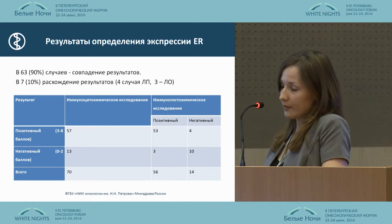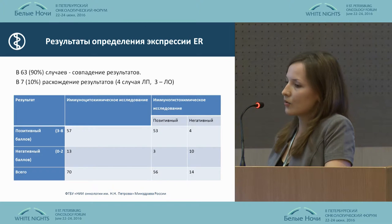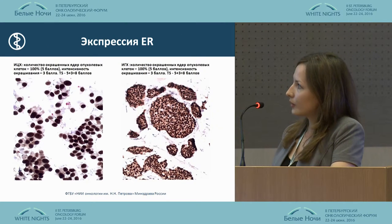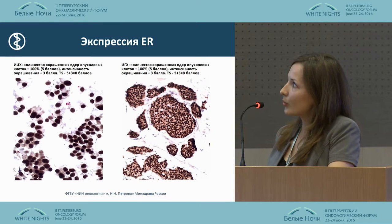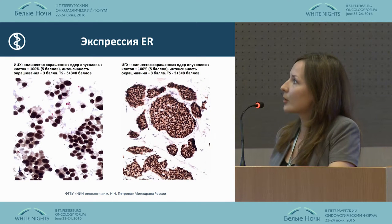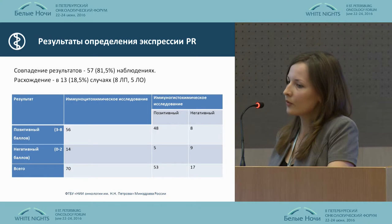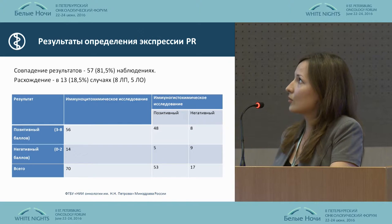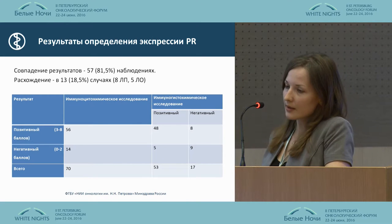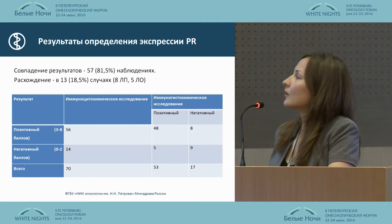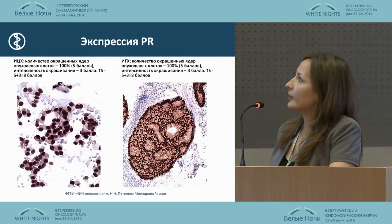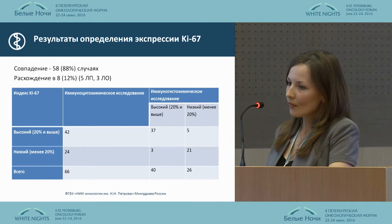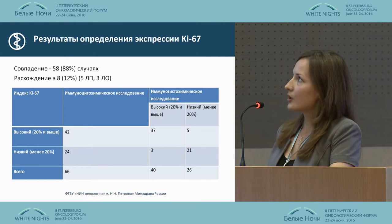For the comparison of estrogen receptors, the compatibility is 90% and the deviation is 10%. For progesterone receptors, the coincidence of results is 81% and the deviation is 18.5%. The picture shown here provides an example of these findings.